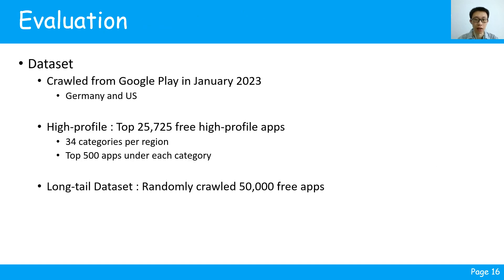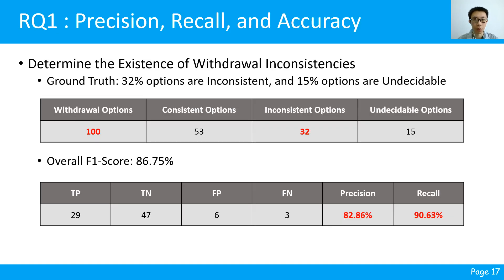We conduct a large-scale evaluation of withdrawal inconsistencies. In January 2023, we crawled two batches of datasets from Google Play. We obtained the top 500 apps from each category in both the United States and Germany, resulting in a high-profile dataset consisting of 22,725 apps. We also randomly crawled 50,000 apps to form the long-tail dataset. To evaluate ModeChecker's effectiveness, we randomly sampled 100 withdrawal options and manually verified their inconsistencies. This set contains 32 inconsistent options and 15 undecidable options.